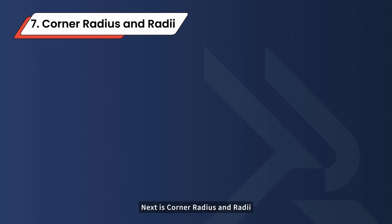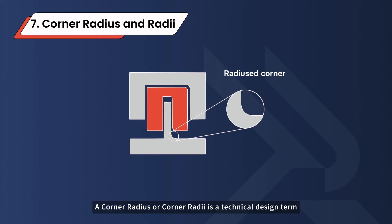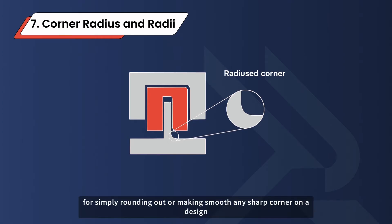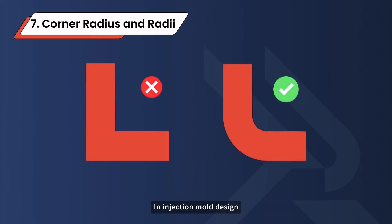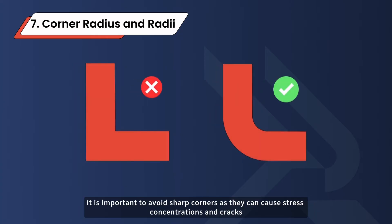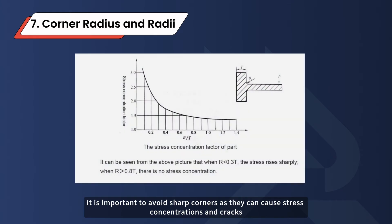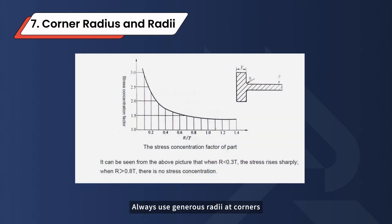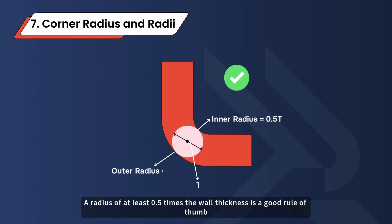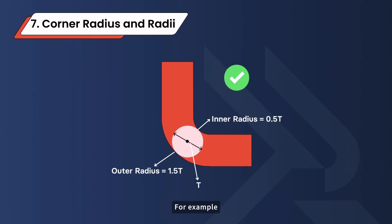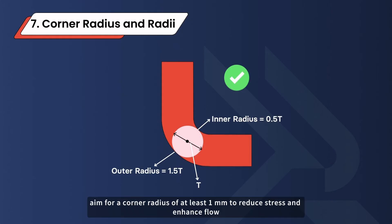Next is corner radius and radii. A corner radius is a design term for rounding out or making smooth any sharp corner on a design. In injection mold design, it is important to avoid sharp corners as they can cause stress concentrations and cracks. Always use generous radii at corners — a radius of at least 0.5 times the wall thickness is a good rule of thumb. For example, if your part has a 2mm wall thickness, aim for a corner radius of at least 1mm to reduce stress and enhance flow.